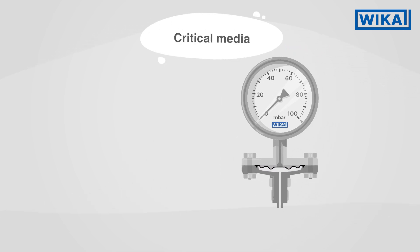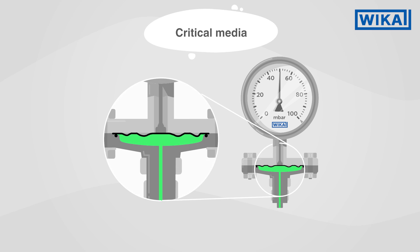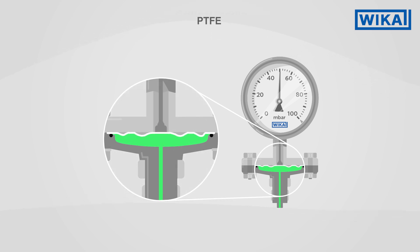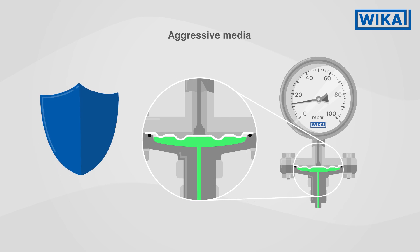Diaphragm pressure gauges also have advantages when used with critical media. The diaphragm element can be coated with a variety of materials, such as PTFE, gold, Hastelloy, and many others. This protects the instrument from aggressive media.